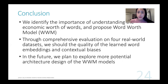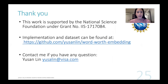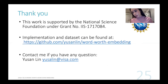In conclusion, we identified the importance of understanding the economic worth of words and proposed a neural network joint task WordWorth model. Through comprehensive evaluation on four real-world datasets, we show the quality of the learned word embeddings and contextual bias. In the future, we plan to explore more potential architecture designs of the WordWorth model. Thank you all very much. This work is supported by the National Science Foundation under grant number 1717084. The implementation and datasets can be found at the GitHub repository link below. Feel free to contact me if you have any questions — my email is shown below. Thank you very much.